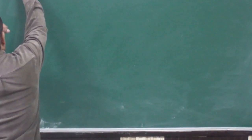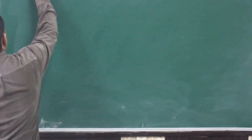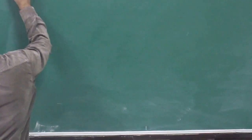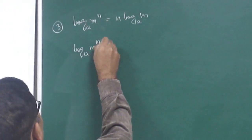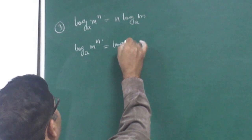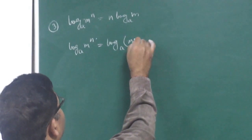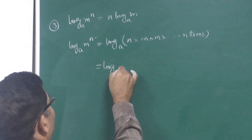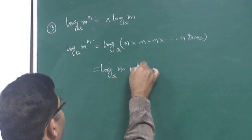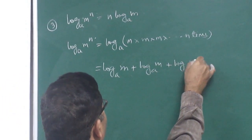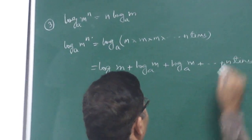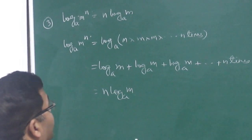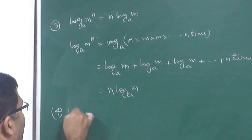The power rule: log of m to the power n to the base a equals n times log m to the base a. Proof: m to the power n can be written as m times m times m... n times. Since multiplication becomes addition in logarithms, this is log m plus log m plus ... n times, which equals n times log m to the base a.